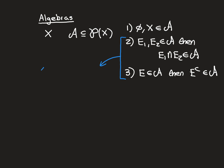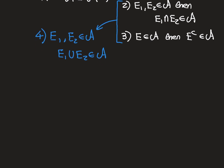We could add a fourth property, though this isn't a separate property because it's actually deducible from properties two and three. The moment two and three are true, this fourth property is going to be true. The fourth property is: if e1 and e2 are elements of the algebra, then e1 union e2 is also an element of the algebra. And of course, just like we did for intersection, the moment this is true, you can then say that for a finite union it's also going to be true.